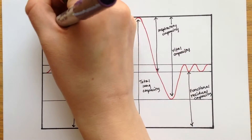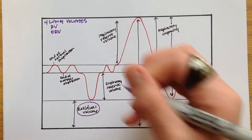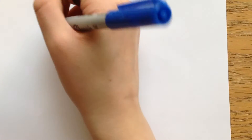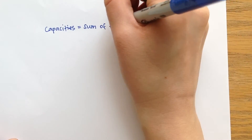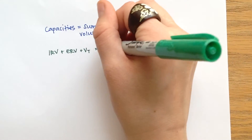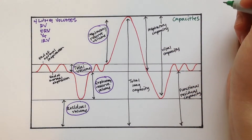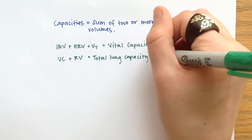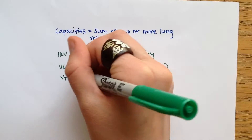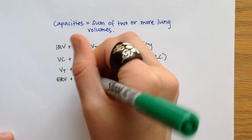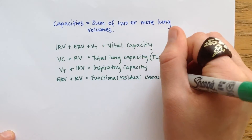There are four different lung volumes: the residual volume, the expiratory reserve volume, the tidal volume, and the inspiratory reserve volume. Capacities are the sum of two or more of these volumes. The vital capacity is the sum of the inspiratory reserve volume, the expiratory reserve volume, and the tidal volume. The total lung capacity is the vital capacity plus the residual volume. The inspiratory capacity is the sum of the tidal volume and the inspiratory reserve volume. Finally, the functional residual capacity is the expiratory reserve volume plus the residual volume.